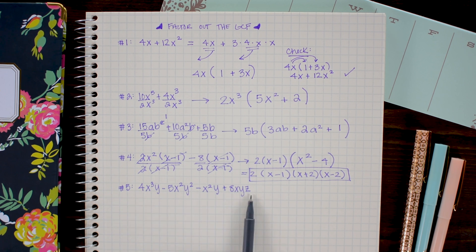First looking for anything the coefficients can divide by. Here we have 4, 5, 1, and 8 as our coefficients so there's nothing we can divide out there.